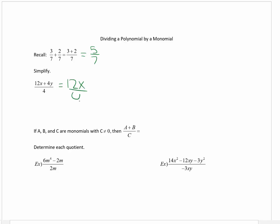12 divided by 4 is 3 with the x, and 4 divided by 4 is 1 times y is y.